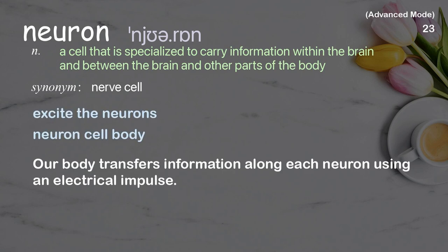Examples: excite the neurons, neuron cell body. Our body transfers information along each neuron using an electrical impulse.